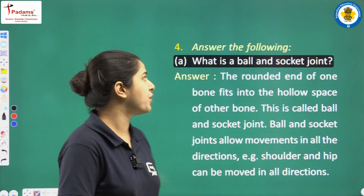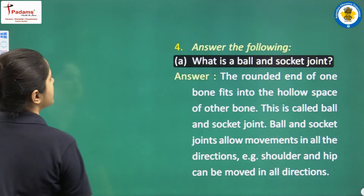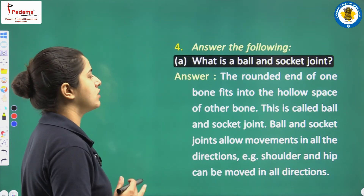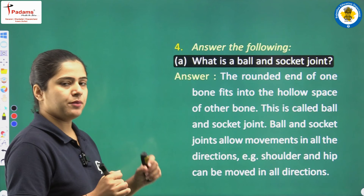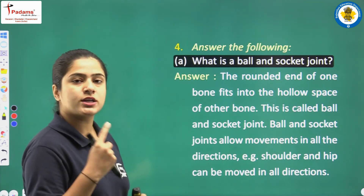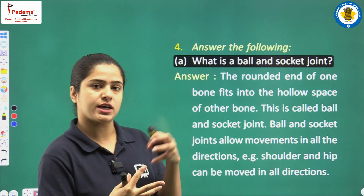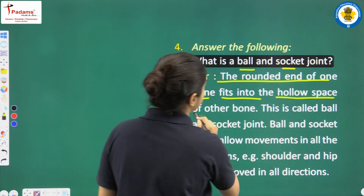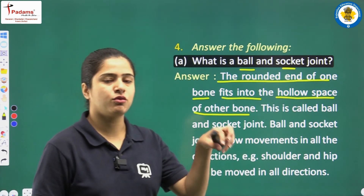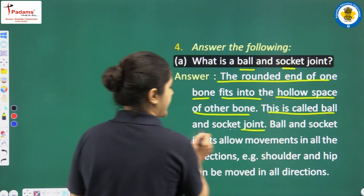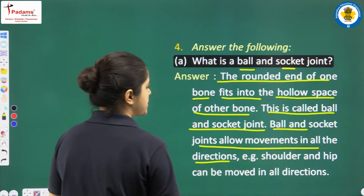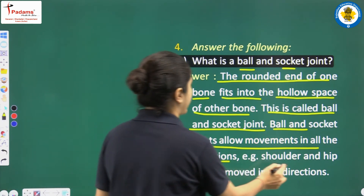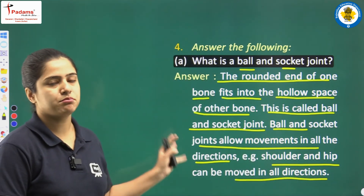Question four: what is a ball and socket joint? The rounded end of one bone fits into the hollow space of another bone — that is a ball and socket joint. Ball and socket joints allow movement in all directions. For example, our shoulder and hip can be moved in all directions — back, front, sideways — and these are examples of ball and socket joints.